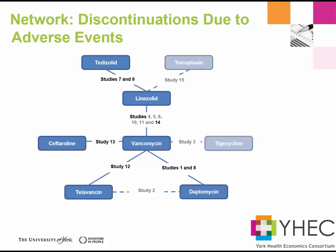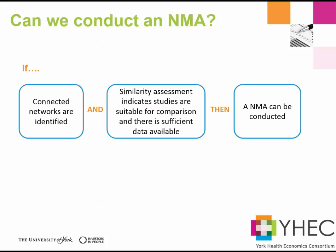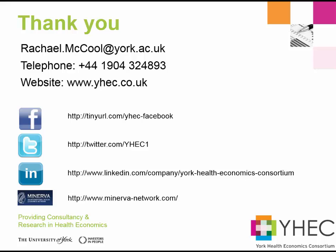You can see how the networks vary by outcome depending on the data reported across the trials. The network developed at the beginning assumes all trials contribute to all analyses, which is rarely the case — each outcome should be assessed in turn. In summary, to determine whether it is possible and appropriate to conduct an NMA, you need a connected network, studies that are suitably similar for comparison, and sufficient data available for the outcomes of interest. Once these key requirements are established, you can begin to plan your analyses. Thank you for listening. For more information on network meta-analysis, please visit our website, yhec.co.uk.